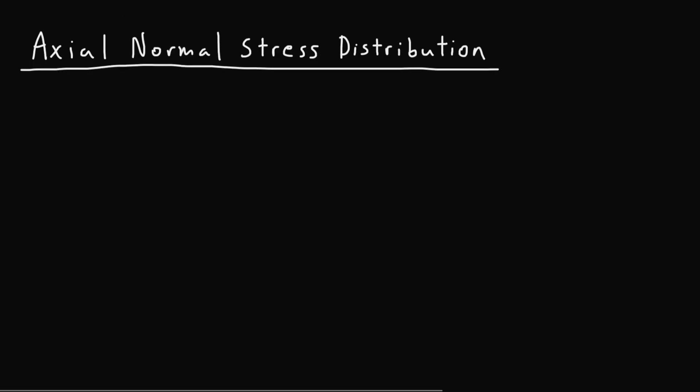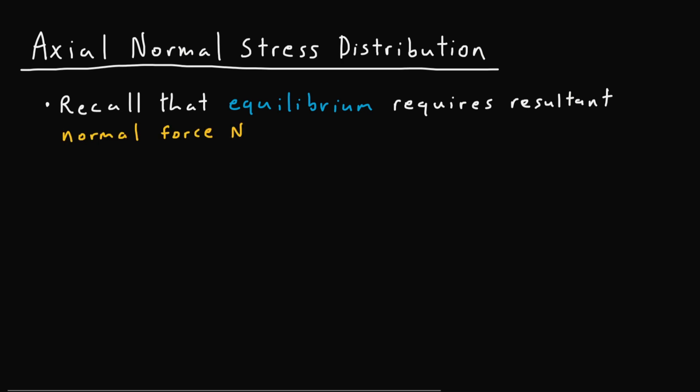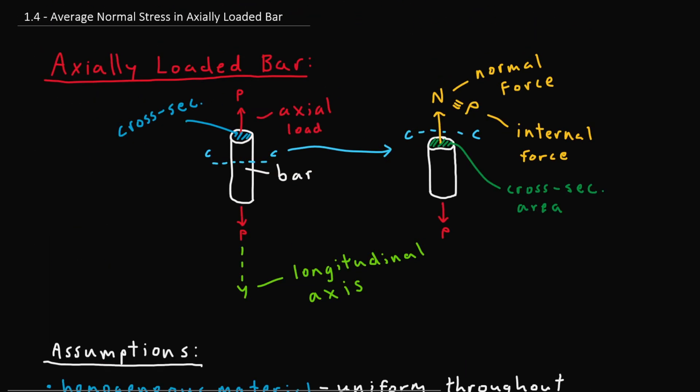Now let's go ahead and look at axial normal stress distribution. So first let's recall that equilibrium pretty much requires the resultant normal force n within a body that is subjected to external loads to be equal to that external load p. So n equals p exactly like we saw back in the first example.